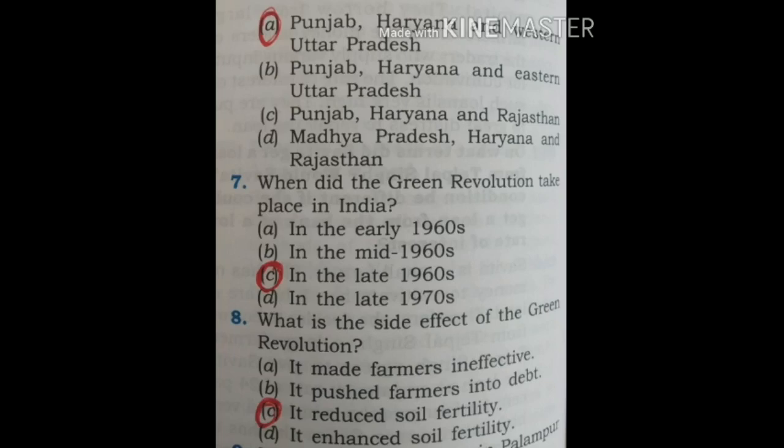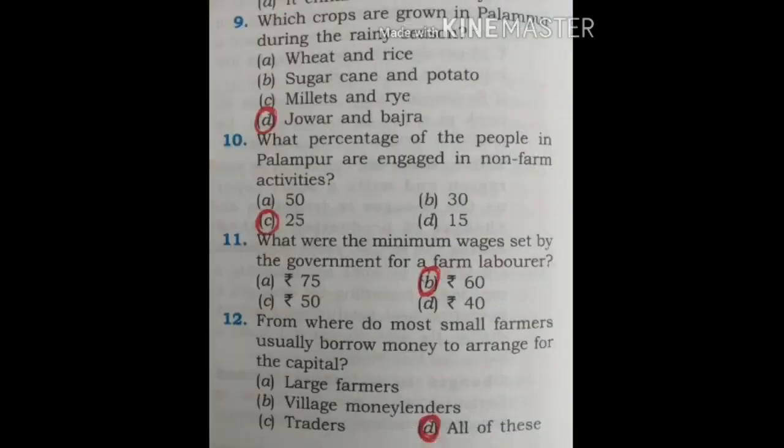Question 8: What is the side effect of the Green Revolution? The four statements are: It made farmers ineffective; It pushed farmers into debt; It reduced soil fertility; It enhanced soil fertility. The correct option is C — It reduced soil fertility.